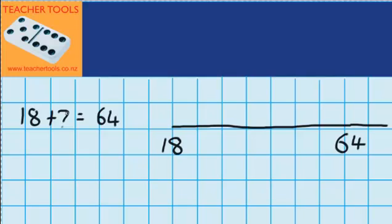First of all I need to think to myself, what tidy number can I jump that will take me just past 64? And I'm going to start at 18. Well I know that if I jump up a jump of 50, that's going to take me just past 64. It's going to take me to 68.